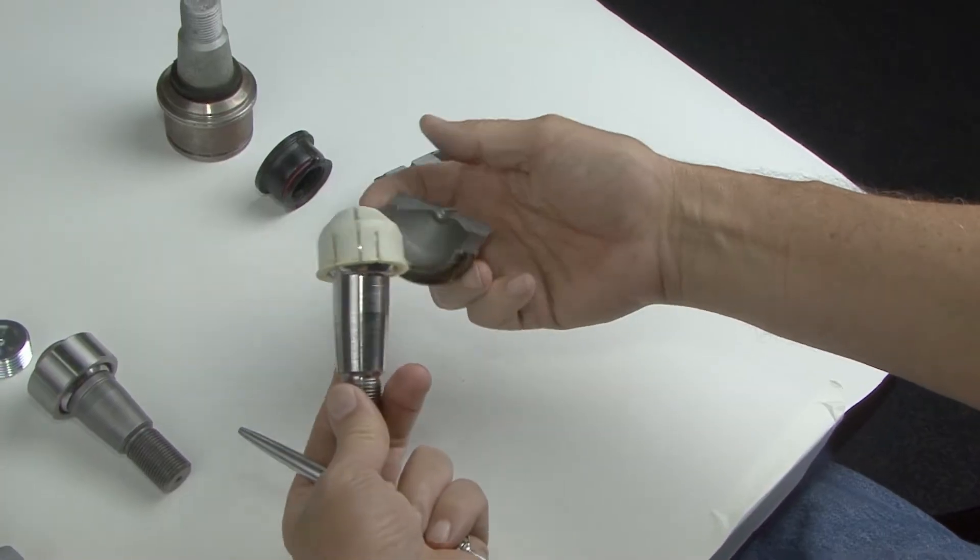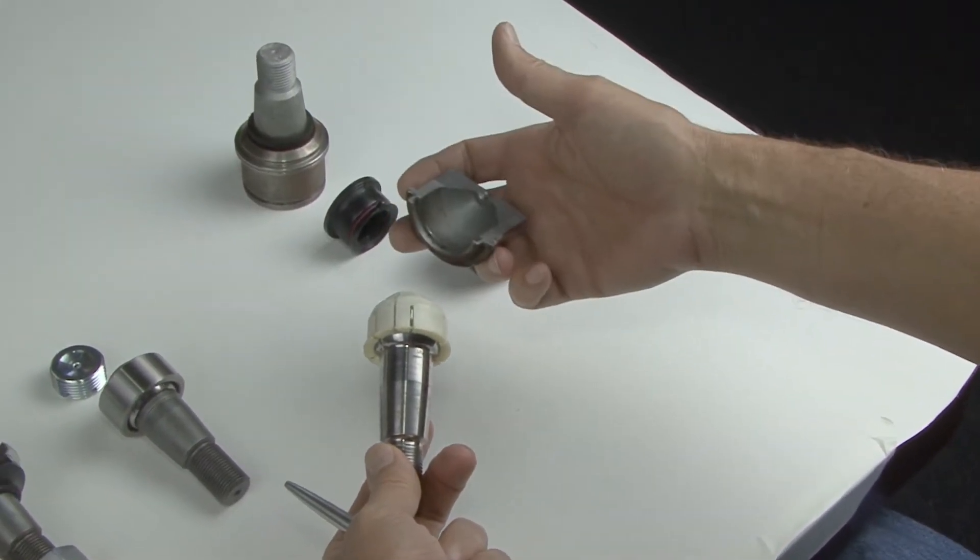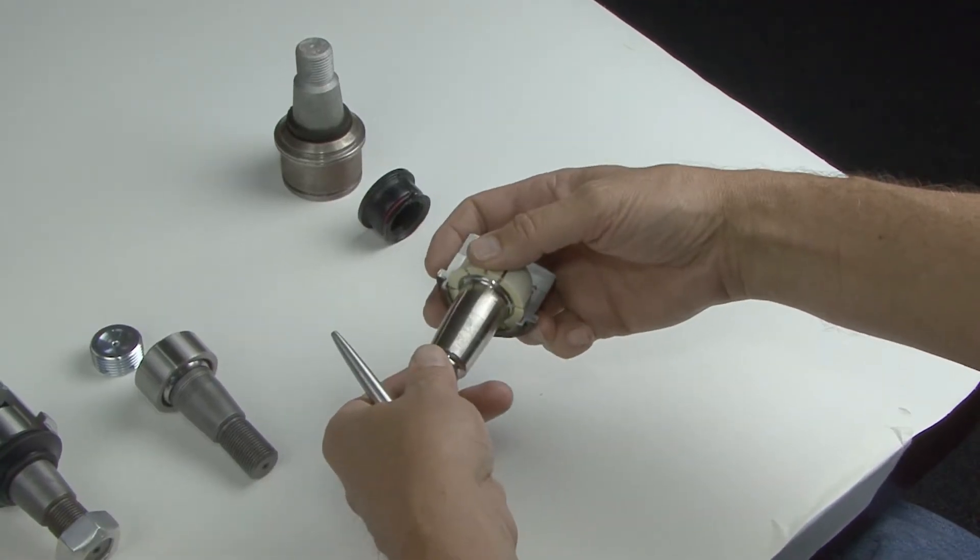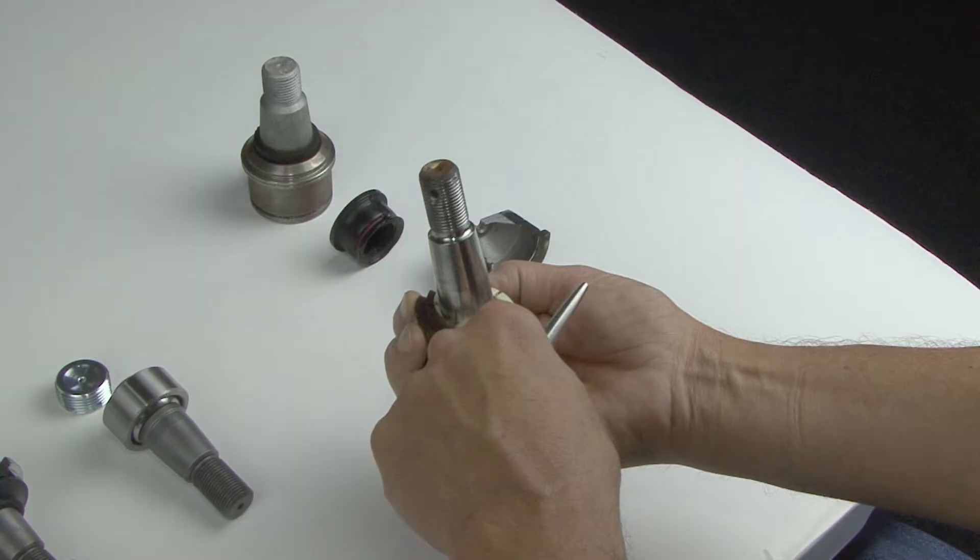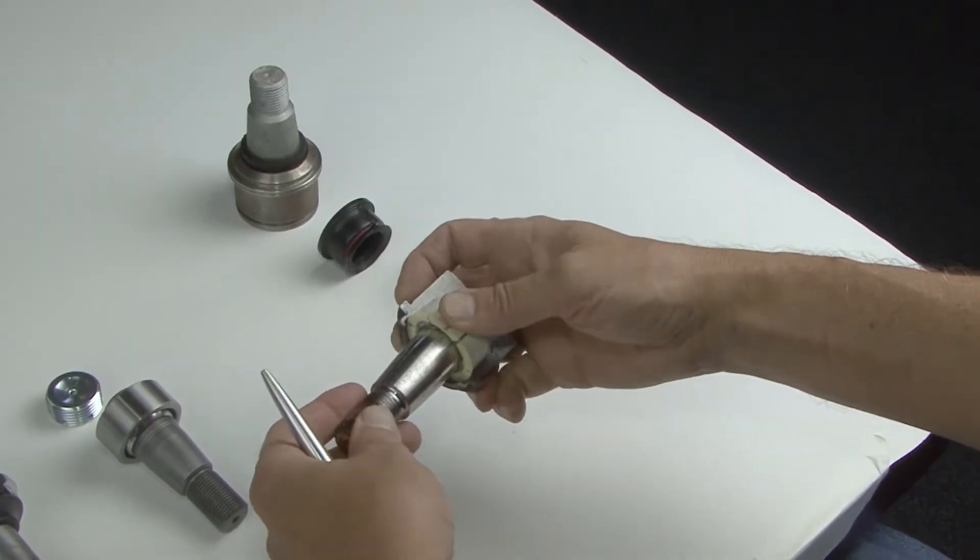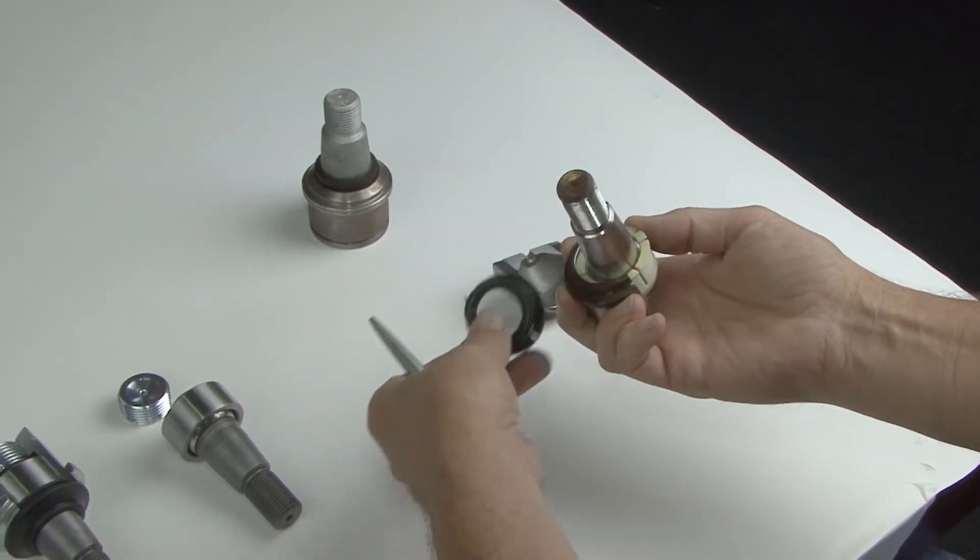The way they manufacture these is they have a cup, they push this piece of plastic inside with the ball on it, and then they crimp over the top portion. It's kind of a cold forming process and it pinches the boot in position, and that's what seals it off.